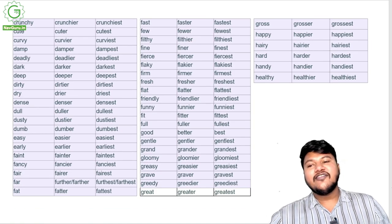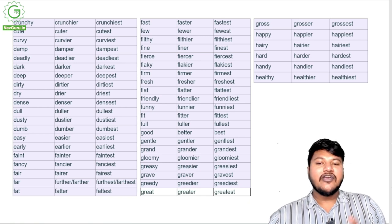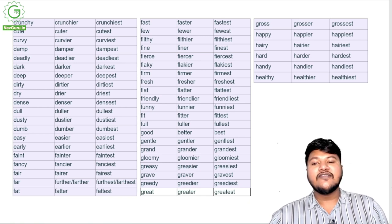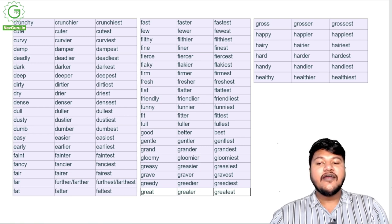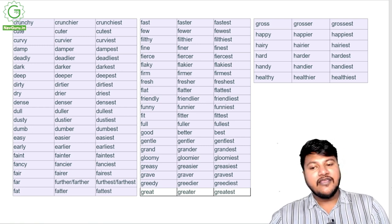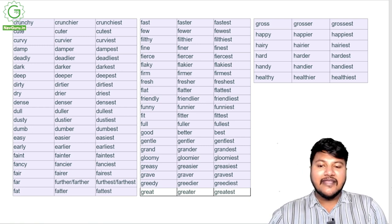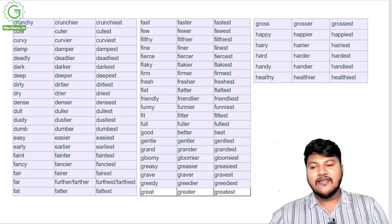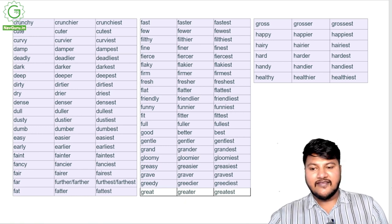Crunchy, crunchier, crunchiest; cute, cuter, cutest; curvy, curvier, curviest; damp, damper, dampest; deadly, deadlier, deadliest; dark, darker, darkest; deep, deeper, deepest; dirty, dirtier, dirtiest; dry, drier, driest; dense, denser, densest; dull, duller, dullest; dusty, dustier, dustiest; dumb, dumber, dumbest; easy, easier, easiest; early, earlier, earliest.